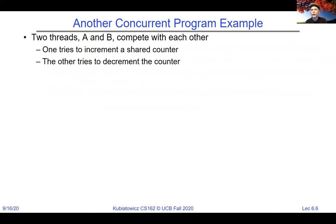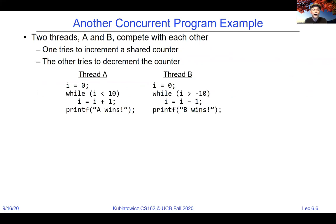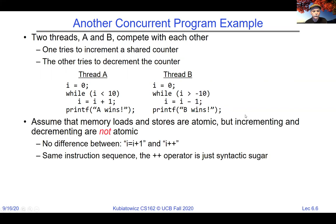Here's another concurrent program example. Two threads A and B compete with each other: one tries to increment the shared counter, the other tries to decrement it. Thread A and thread B both set the same global variable i to zero. Then in a while loop, while i is less than 10, A increments i; B says while i is greater than minus 10, it decrements. Whoever wins gets to say A wins or B wins. We assume that memory loads and stores are atomic, but incrementing and decrementing are not atomic. There's no difference between i = i + 1 and i++ — compiled, those are the same underlying multi-instruction sequence.